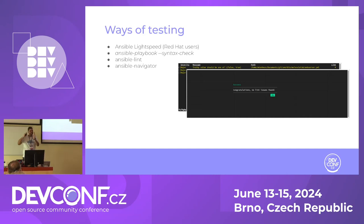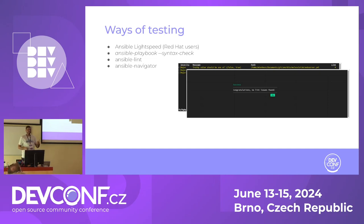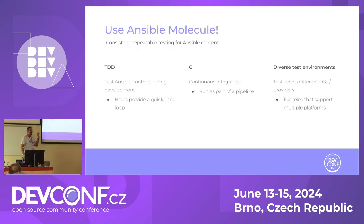Say you're deploying a web application - a virtual machine with Apache and a MySQL backend. Navigator, Ansible Lint, and syntax check can say you're using correct modules and an idempotent playbook, but if you don't put the correct parameters inside your playbook, it won't reach the expected result in production. The idea behind Molecule is that you can test the actual outcome. When you talk about tests, you also need an environment - a sandbox or dev environment - which is one of the issues Molecule tries to solve.